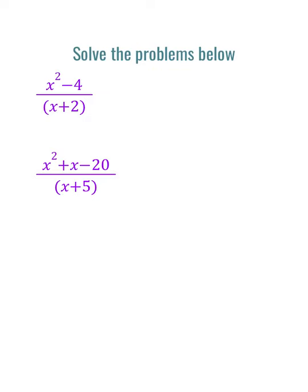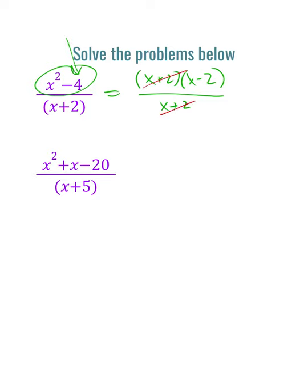Just a couple more examples. First, we have a difference of perfect squares, so we can rewrite that as x plus 2 times x minus 2 — as we can with any such binomial. That second term is minus a perfect square: 4 is 2 squared. We have x plus 2 in the denominator, so we have x plus 2 in numerator and denominator, leaving us with just x minus 2.